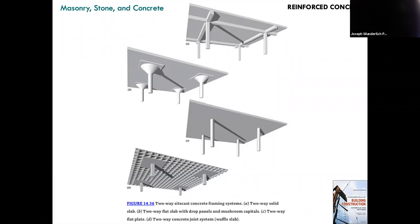Here are some standard ways to create concrete buildings. Site-cast is compared to precast, which can be manufactured in a factory. Tilt-up slabs were site-cast but precast on-site and then tilted up. We normally talk about pour-in-place, where you set up formwork, place the concrete, cast it, and then pull the formwork off and reuse it. There are different forms with different names — two-way slab, flat plate, waffle slab.